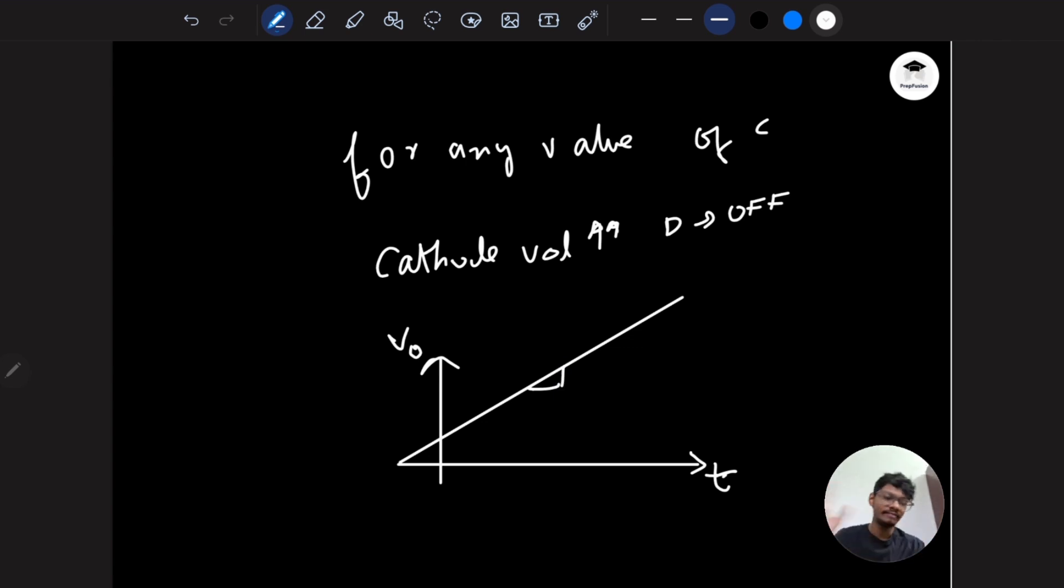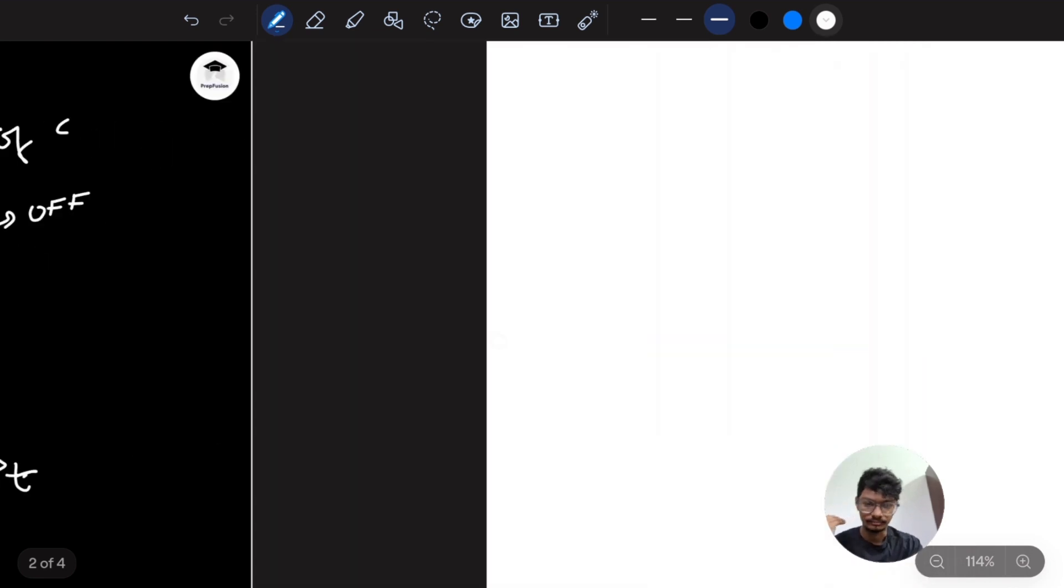The slope - why will this linearly charge? I've explained this concept multiple times in my videos on the other channel Profusion as well, so I will explain it once more. If I have a simple C and a current source like this - this current source is 0.5 milliamps and this is simple C.